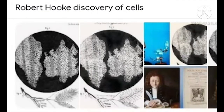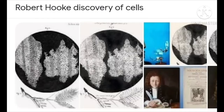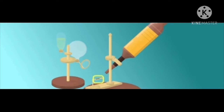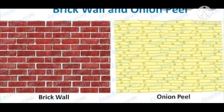Robert Hooke in 1665 observed slices of cork under a simple magnifying device. Cork is a part of the bark of a tree. He took thin slices of cork and observed them under a microscope. Cells are the basic building blocks of living things. The human body is composed of trillions of cells, all with their own specialized function. Cells provide structure for the body, take in nutrients from food, and carry out important functions.